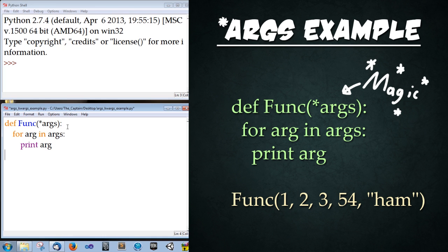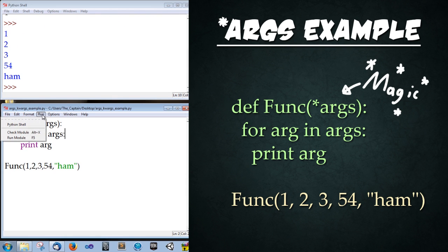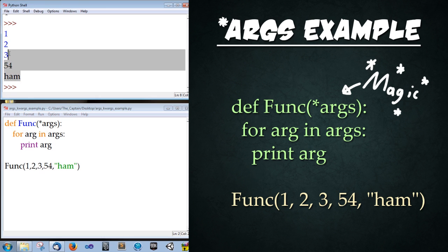Now let's test this function. We're going to type Func(1, 2, 3, 54, 'ham') - just a whole bunch of arguments so you can see the full range of it. Let's save it and run it. You can run it from the menu bar using run module or F5. I went ahead and ran it and everything printed out exactly as I thought it would.